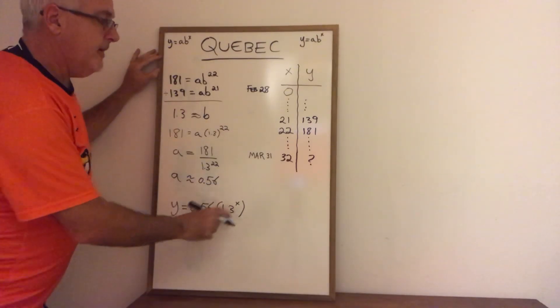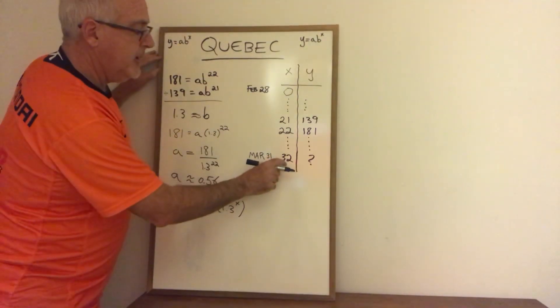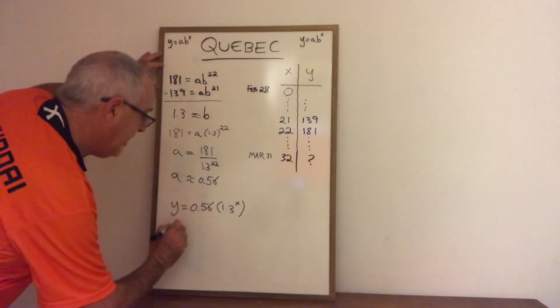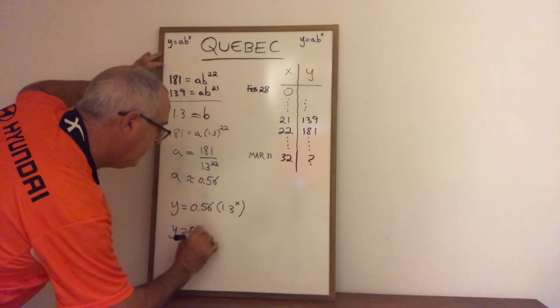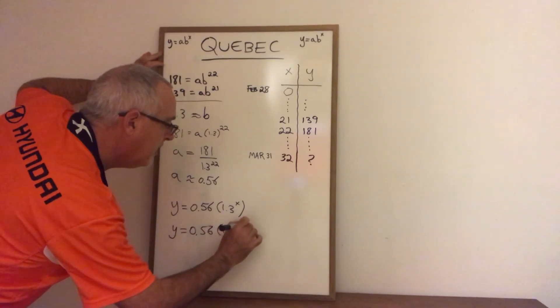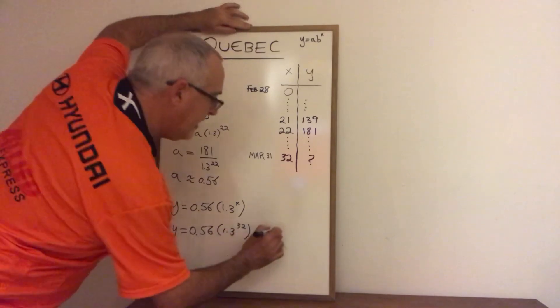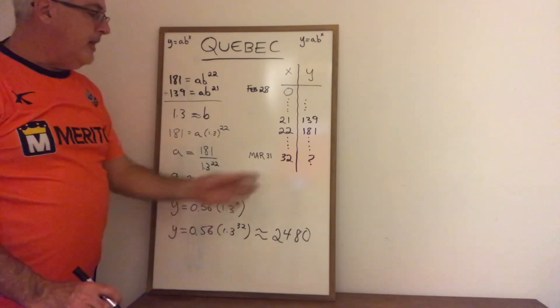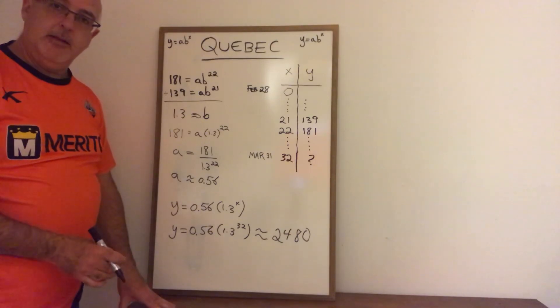Now I can plug another value into this equation in the x position and I'm choosing to plug in day 32 which will be March 31st. When I do that I get an answer which is approximately 2,480. Therefore my model is predicting that on March 31st there will be 2,480 confirmed cases in Quebec.